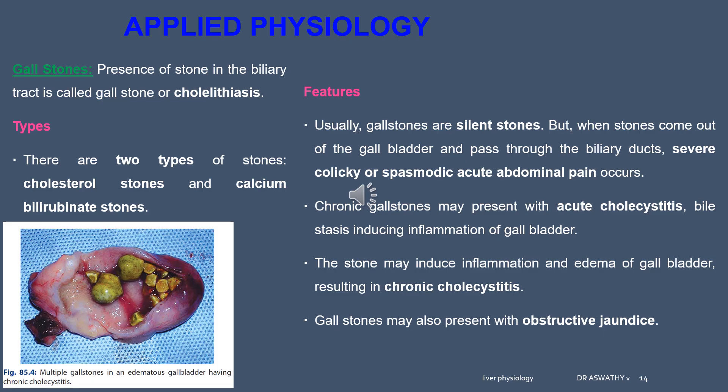The features of gallstones include colicky or spasmodic acute abdominal pain. They can cause inflammation of the gallbladder — cholecystitis. Gallstones may also be present in obstructive jaundice, where the stones create an obstruction preventing bile from reaching the intestine. You need to make a three-mark note on gallstones — it is an important question.